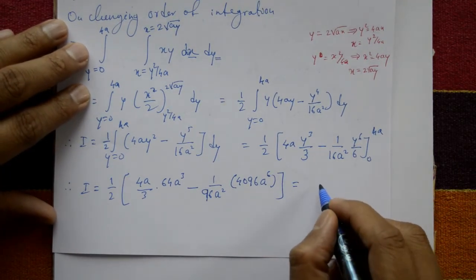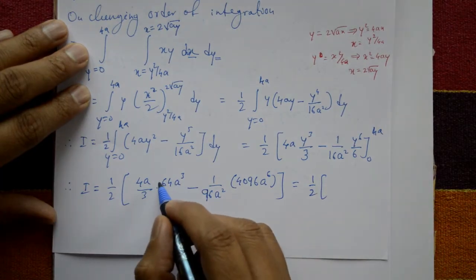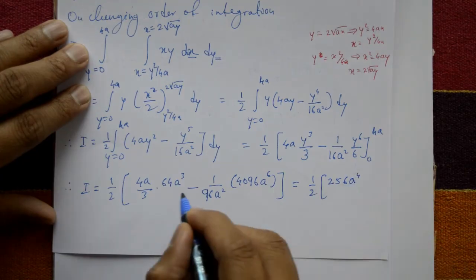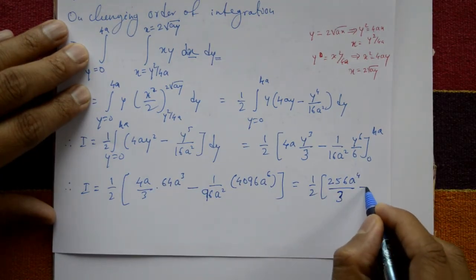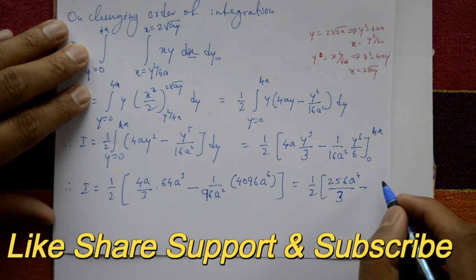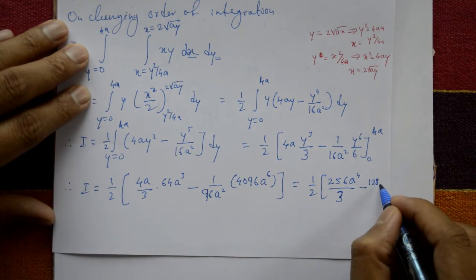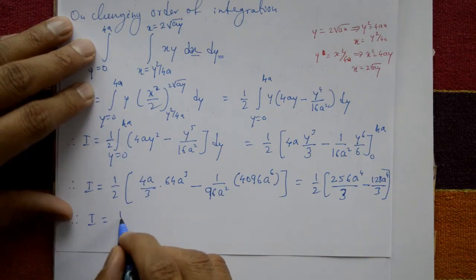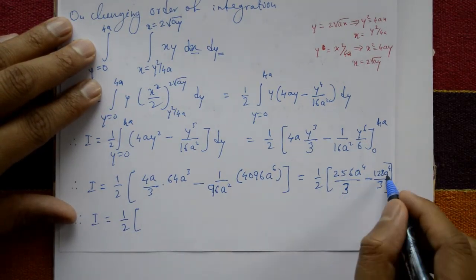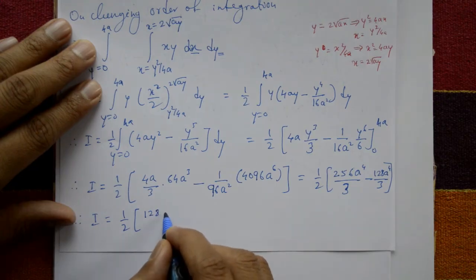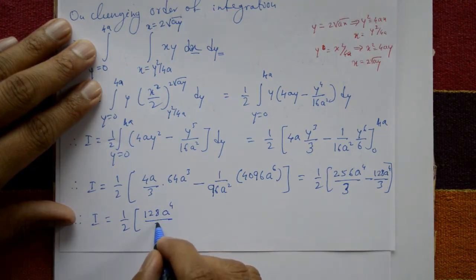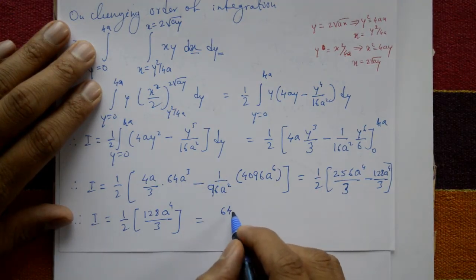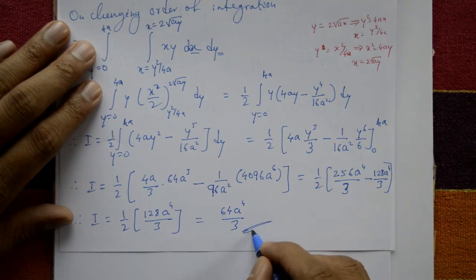This equals one-half times [256a to the 4 divided by 3 minus 128a to the 4 divided by 3]. Therefore I equals one-half times 128a to the 4 by 3, which gives the required solution: I equals 64a to the 4 by 3.